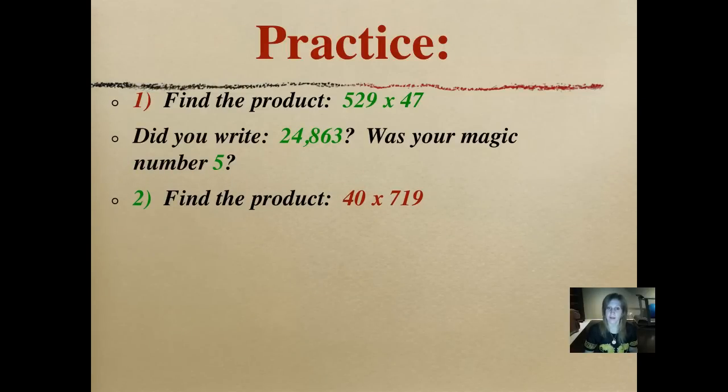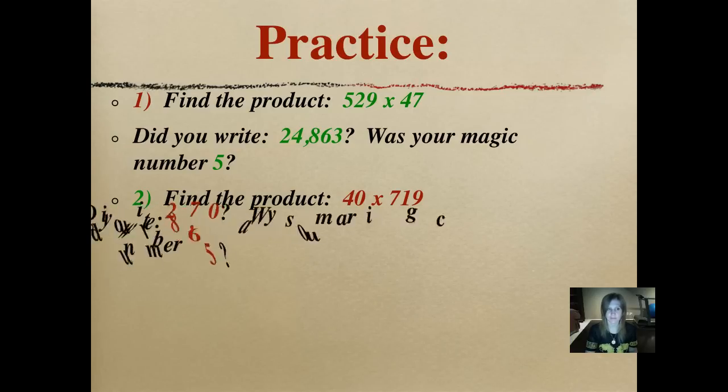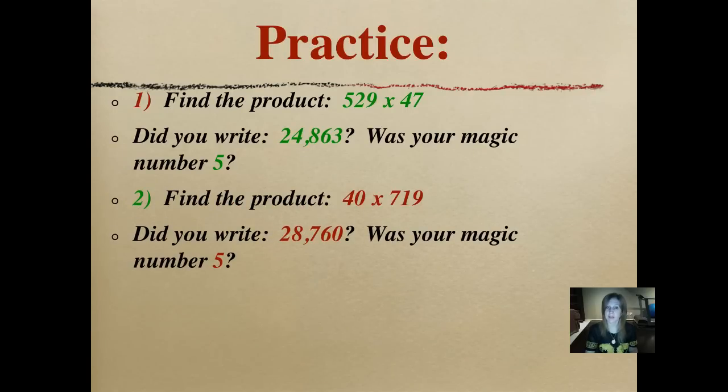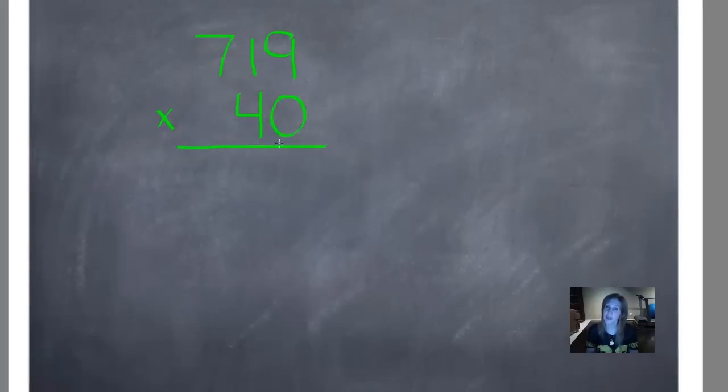Number 2. Find the product for 40 times 719. Don't forget to check. Pause it and push play when you're ready. Did you write 28,760? Was your magic number 5 again? Let's see how we did that one. Did you see how carefully I lined my numbers up? It just makes it less likely that I'll make a mistake that way. We're going to start multiplying by this number. 0 times 9 is 0. 0 times 1 is 0. 0 times 7 is 0. I might could have just written a 0 here and then started multiplying.